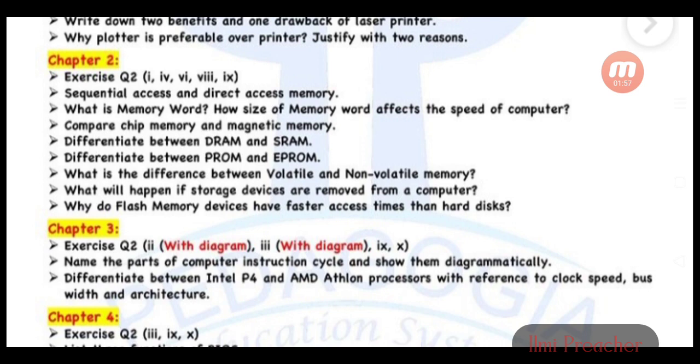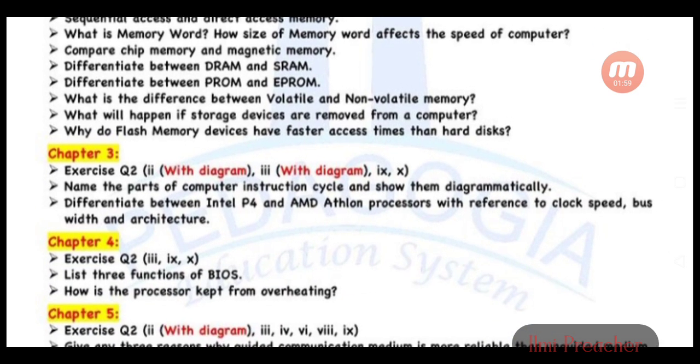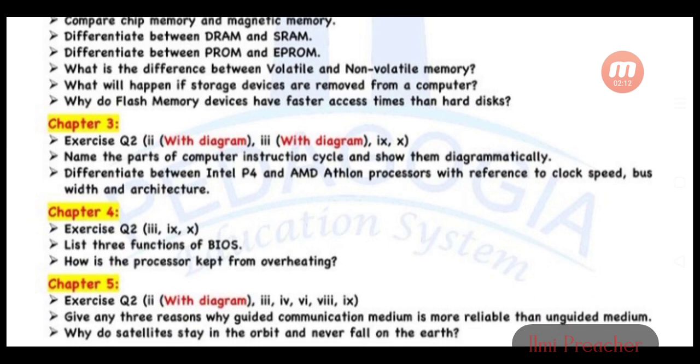Chapter 3, Exercise question 2: parts 2 with diagram, 3 with diagram, 9, and 10. Name the parts of computer instruction cycle and show them diagrammatically. Differentiate between Intel P4 and AMD Athlon processors with reference to clock speed, bus width, and architecture.